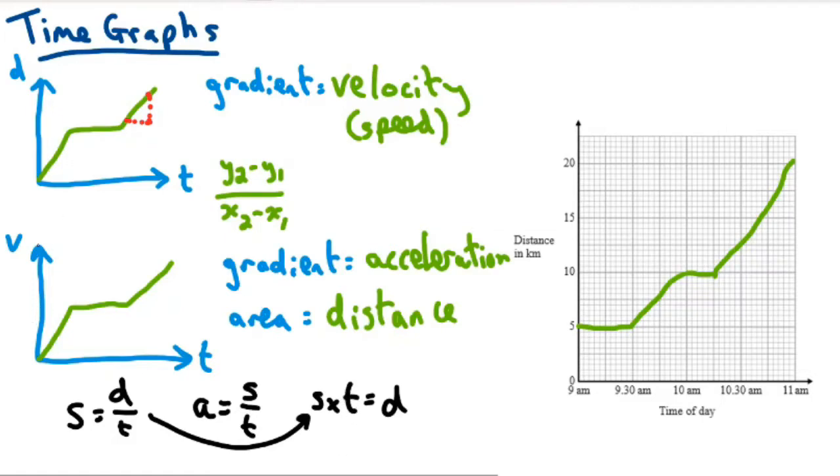Well, if we were to do our velocity, our speed, times our time, that would give us the area here. Say we were looking at just this rectangle. The height is the v, the width is the t. Together, that's the area. So, the area is the distance.